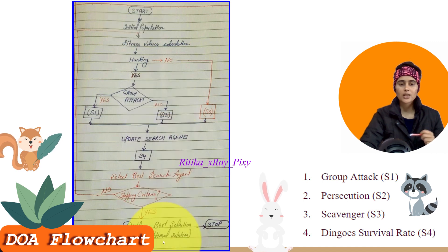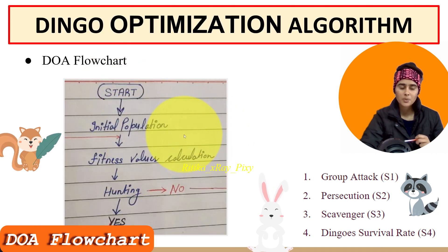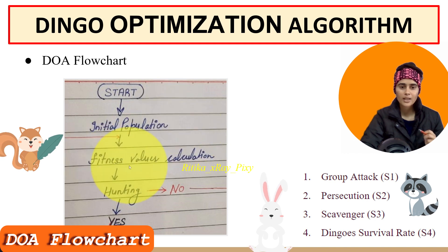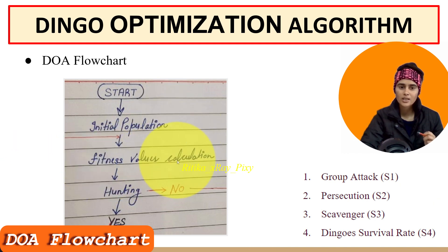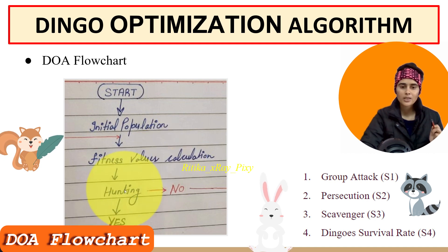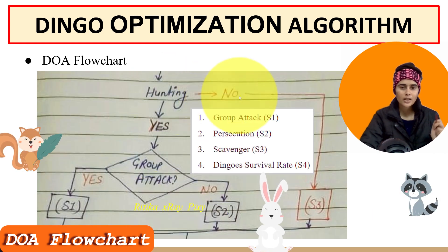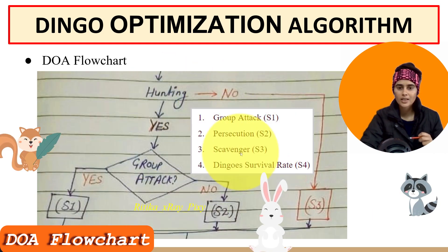There are four mathematical models used in this algorithm to simulate dingo hunting strategies. Looking at the flowchart: first we initialize the population randomly in the search space, then evaluate performance by calculating the fitness value for each agent using the objective function. We then rank agents from best to worst and save the best solution in each iteration. After that we check whether dingoes are hunting or not.